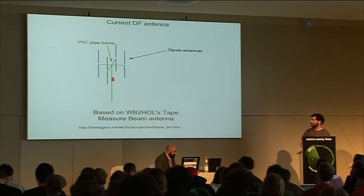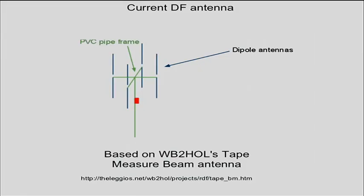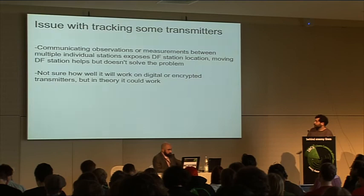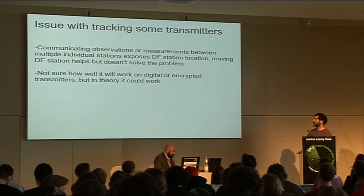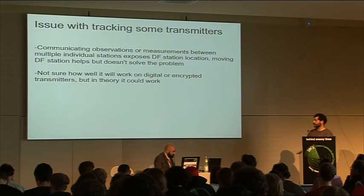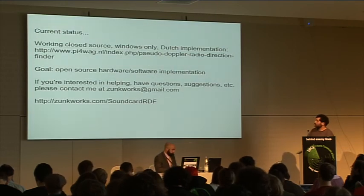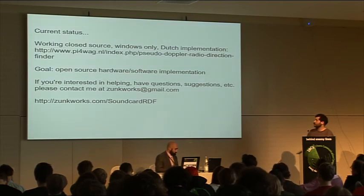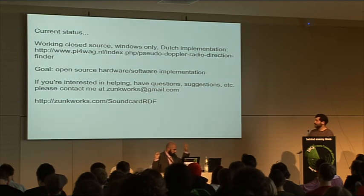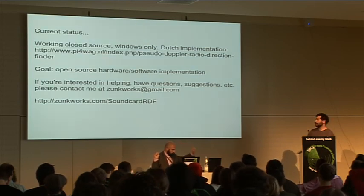This is the antenna setup I'm currently using. It's pretty simple — it's made out of tape measures and PVC pipe. There are other variations you could do, like four quarter-wave whips. There are some problems if you were going after something sensitive, like police, and you were coordinating over the internet, because you'd expose your location to do the triangulation with other random people. There is a current working version that some Dutch guys built. I'd like to make an open-source hardware and software implementation. For more information, contact me via email. Thanks.